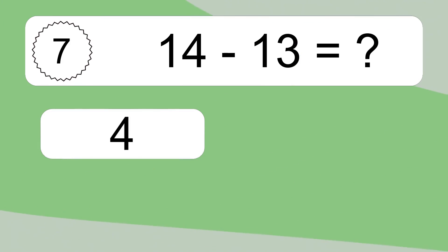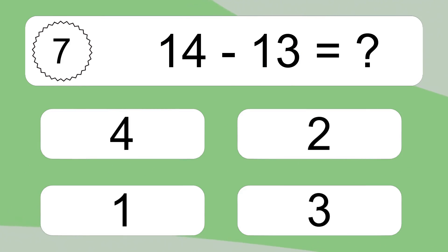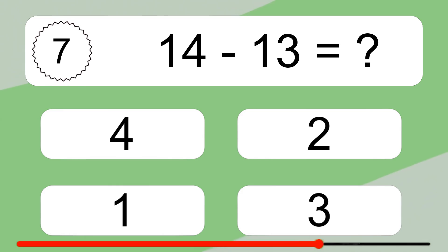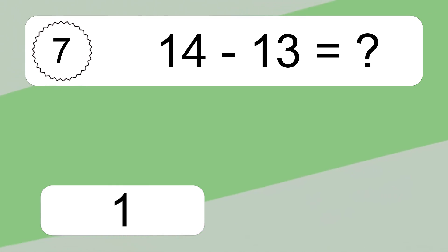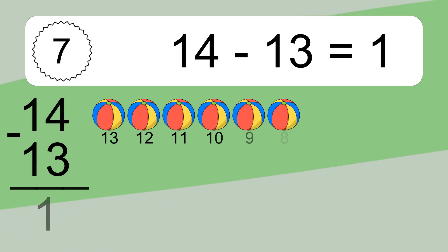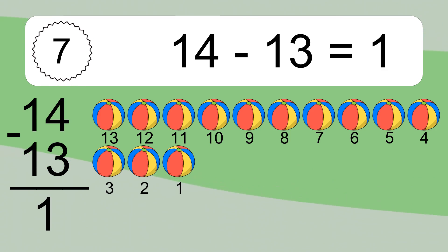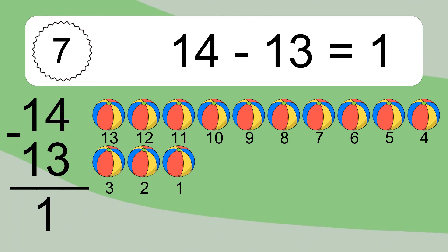14 minus 13 equals what? 14 minus 13 equals 1. Let's count it: 4, 3, 2, 1.